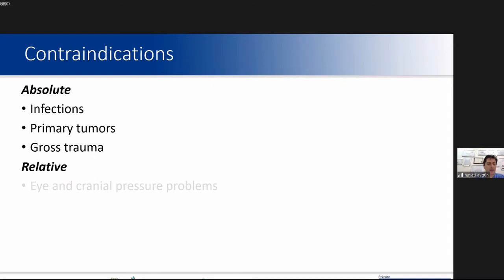We also have some contraindications. Infections that are not well controlled, carrying a risk of spreading with hydrostatic pressure, and primary tumors are certain contraindications for UBE surgery. Additionally, excess from vertebral column to torn spaces is another contraindication due to the fluid medium used. Intra-canal pressure problems and glaucoma-like eye problems are relative contraindications.